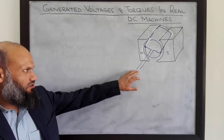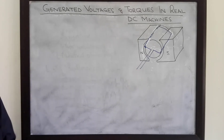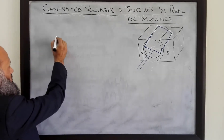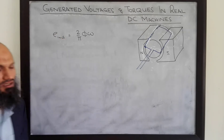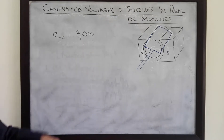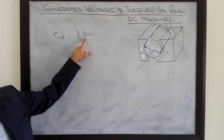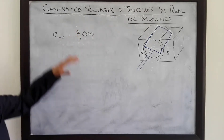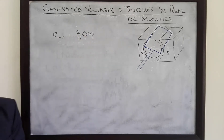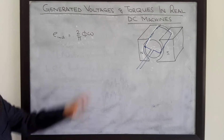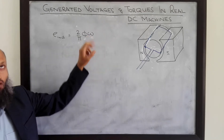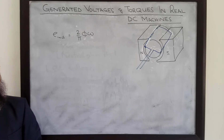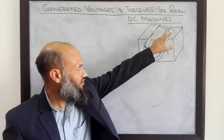We have discussed in detail the expression for generated voltage in a single loop rotating in a magnetic field generated by curved pole faces. We learnt that the induced voltage was given by the expression (2/π)φω — the voltage induced in this coil depends upon the flux in the machine and the speed of rotation, plus a constant.